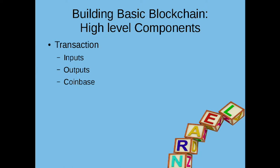A little more depth on transactions: they are typically made up of inputs, and they point to outputs. There's a special transaction called the Coinbase, which is the transaction that actually generates the currency. What distinguishes a Coinbase transaction is that it has no inputs — it comes from nowhere, it's just generated. So it's basically just a list of inputs where the stuff came from and outputs where it's going to go. To create a coin, you just have no input. It comes from nowhere. Magical internet currency.